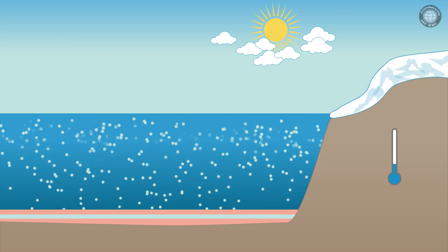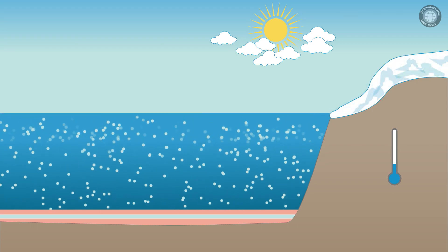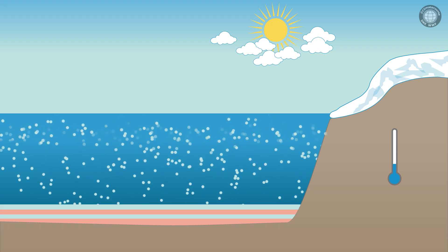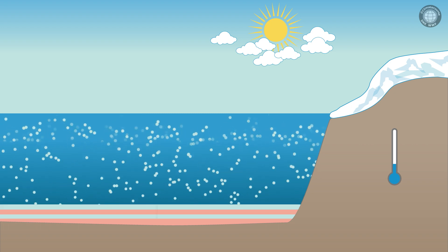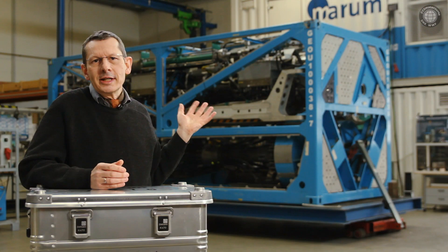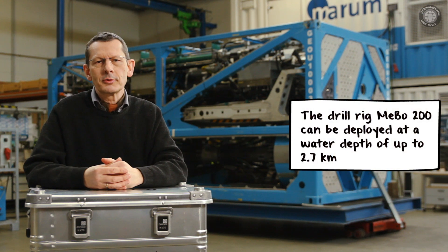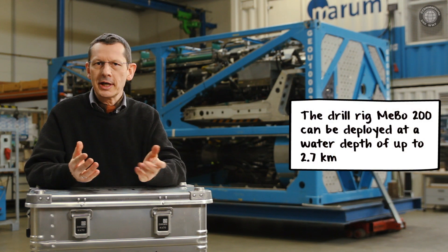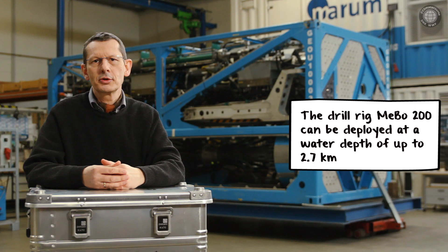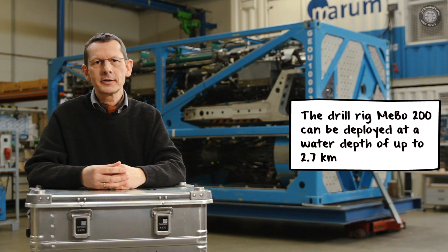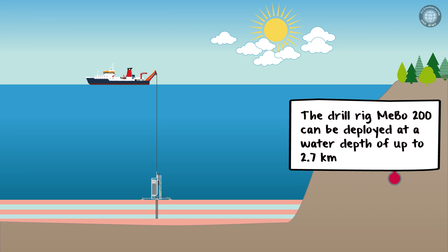In order to access this information, we need to obtain samples from the ocean floor. To do this, we can use a drill rig. Behind me, you can see the Bremen Seafloor Drill Rig MEBU 200, which we can deploy in the ocean at a water depth of up to 2.7 kilometers and remotely control from a research vessel to drill up to 200 meters into the ocean floor.